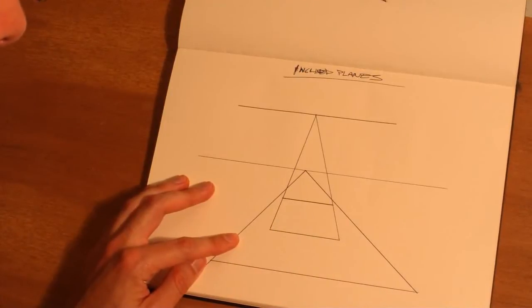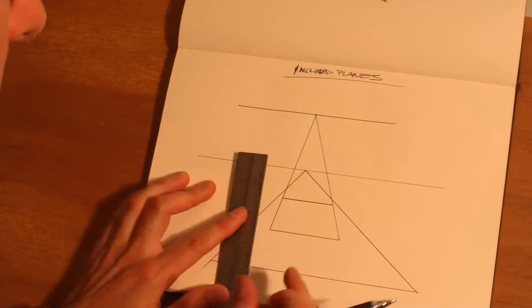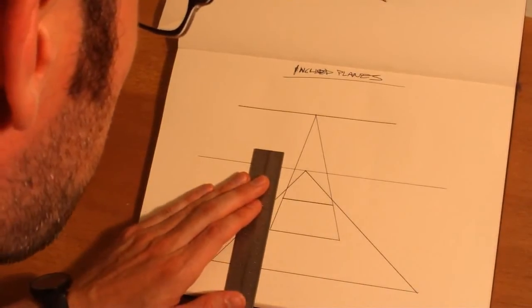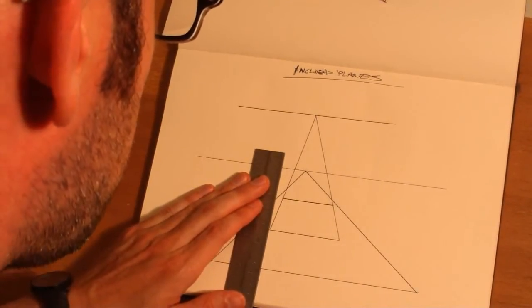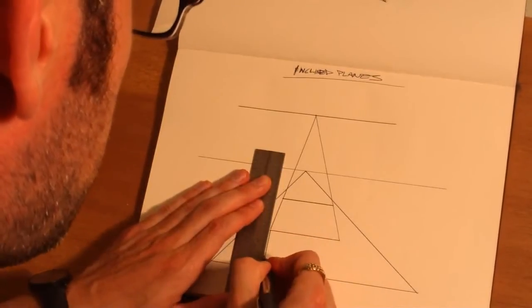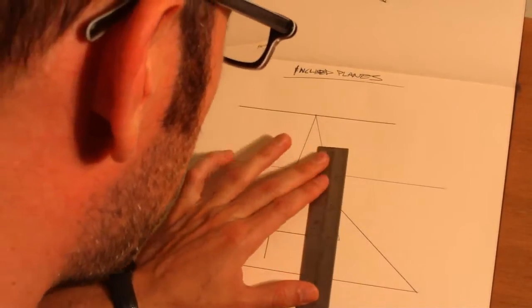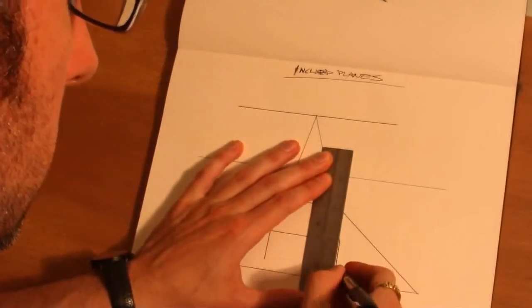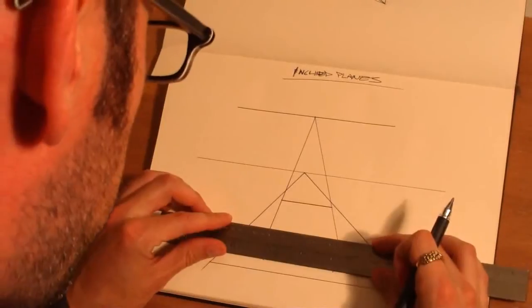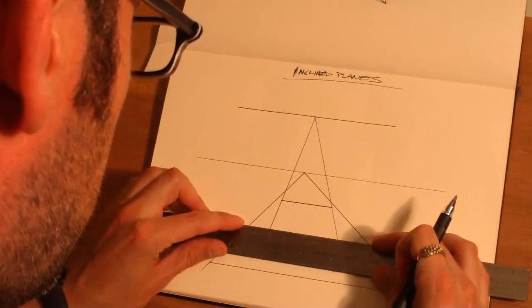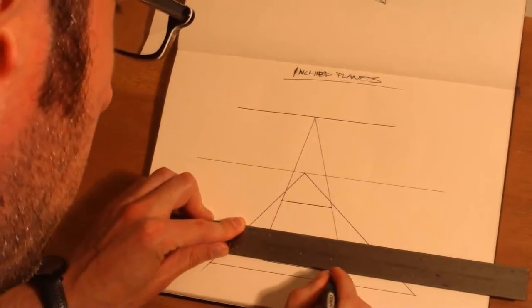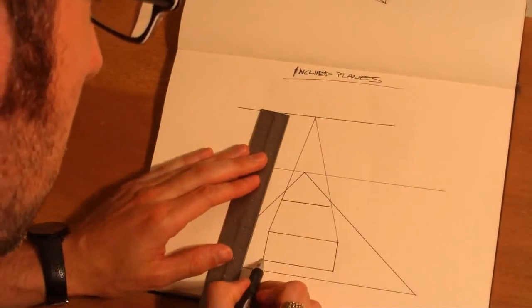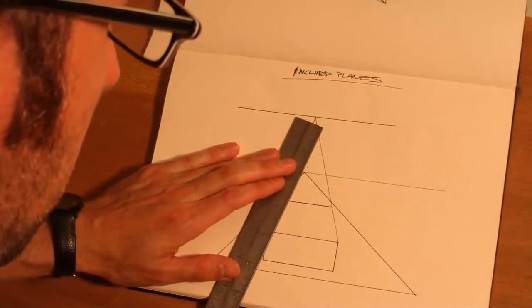So let's say that we wanted to draw a box that's actually inclined. We're going to drop some verticals off of this and make it sit on this existing plane. Make that parallel. Now we're going to actually take these back to our original vanishing point.